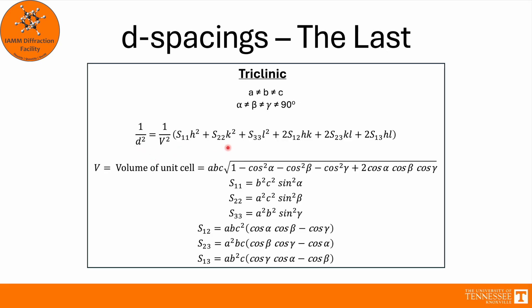So here's the equation for the d-spacing of the triclinic system. But this V is the volume of the unit cell, which is this entire equation. All of these S values, S11, S22, S33, and so on, they have their own equations down here. So you can imagine if you plugged all of this into this equation up here, it would get incredibly long and very easy to make a mistake by just plugging in values. But this shows you how much having a high degree of symmetry simplifies calculations.